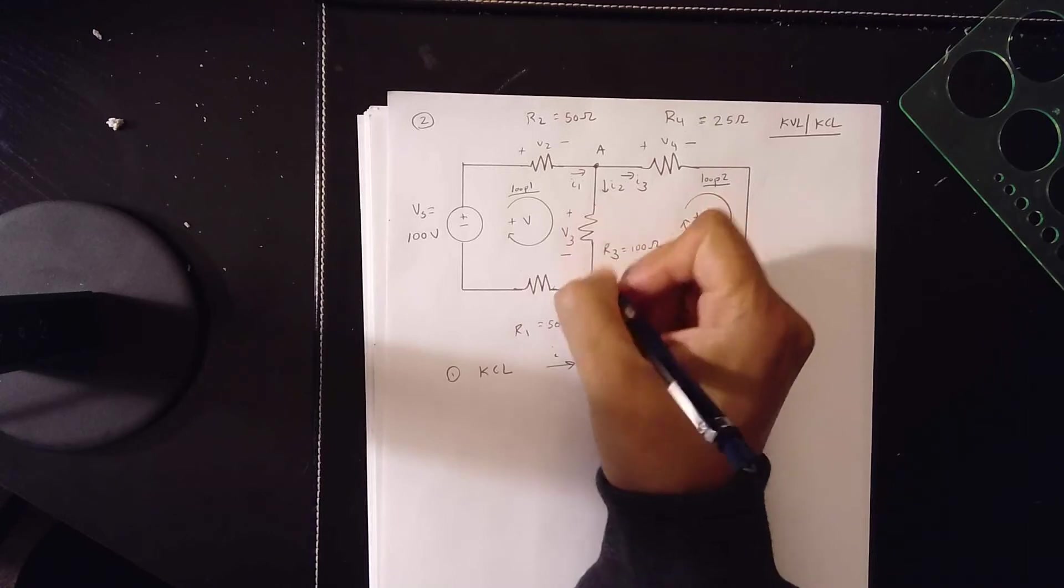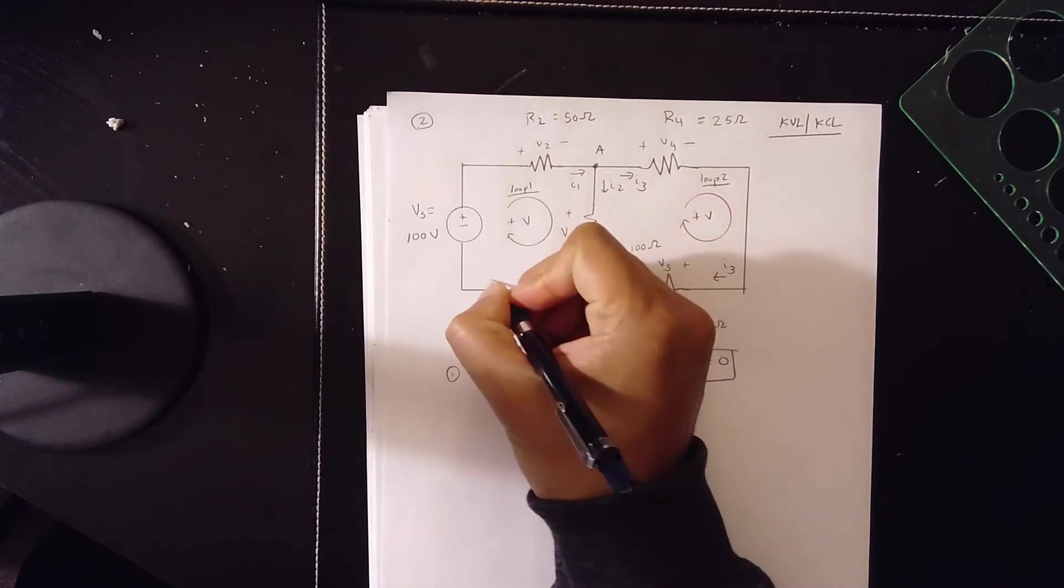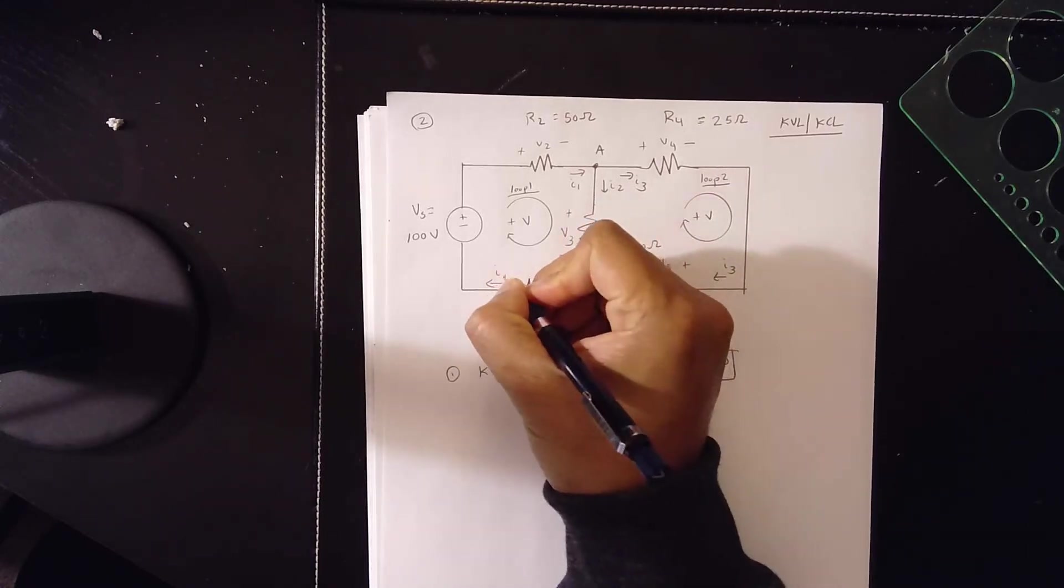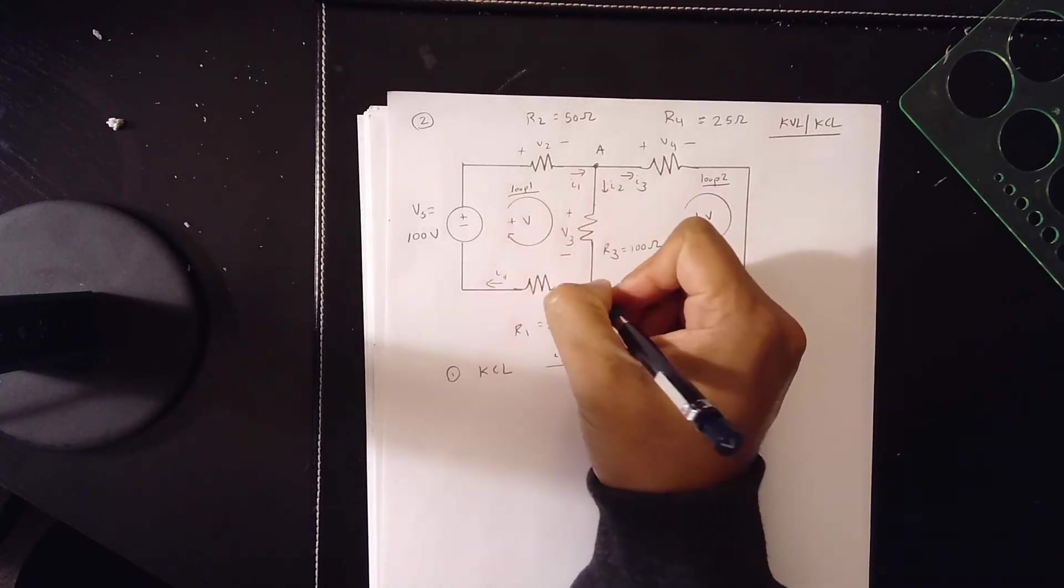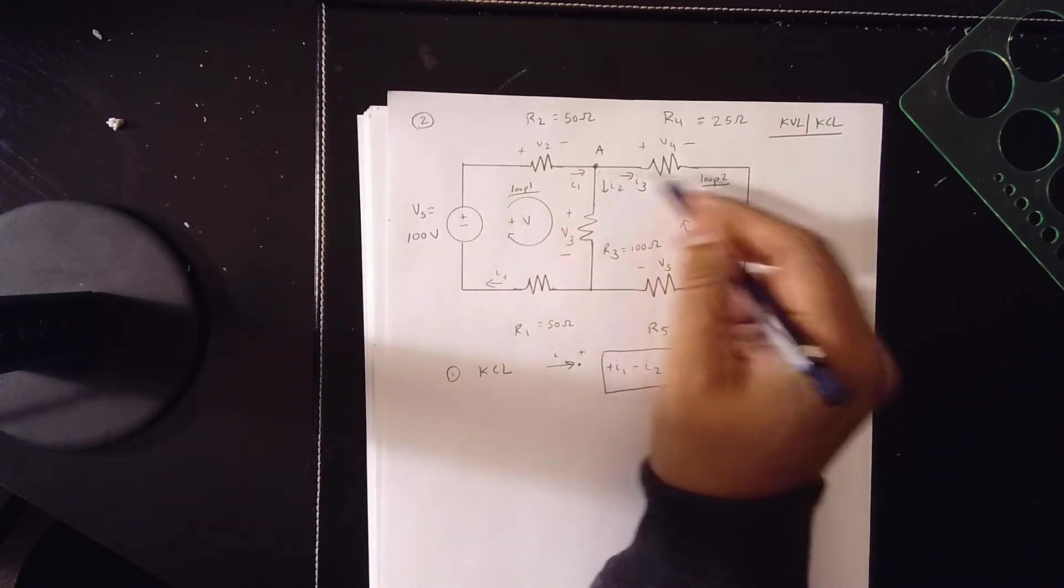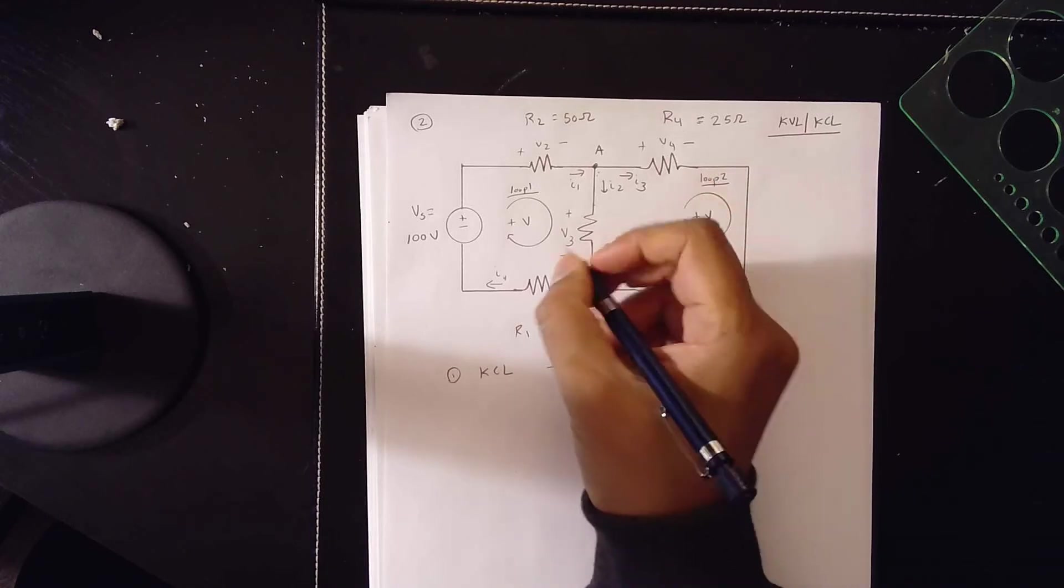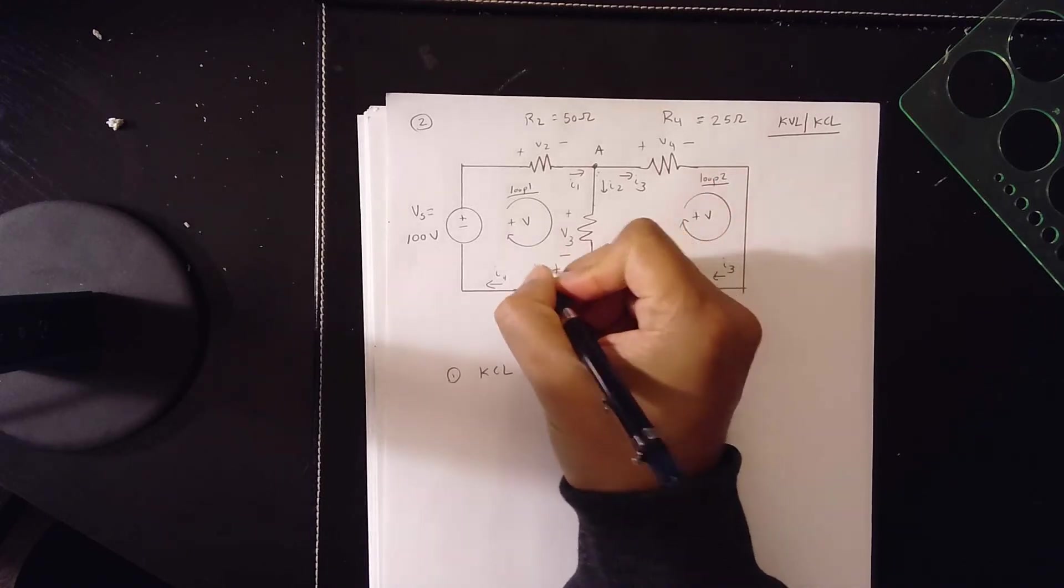And then as the current comes here, obviously, the current's moving this way. I1 is moving here to here. I2 goes from here to here. I3 goes from here to here. So this is going to be V1.